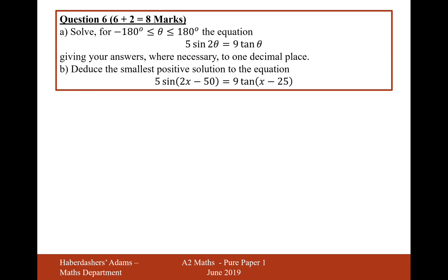Let's now move on to part B. And part B is to deduce the smallest possible solution to the equation 5 sin 2x minus 50 equals 9 tan x minus 25. Well, what we should do here is set θ equal to x minus 25. And remember that θ was equal to 18.4 and 161.6.